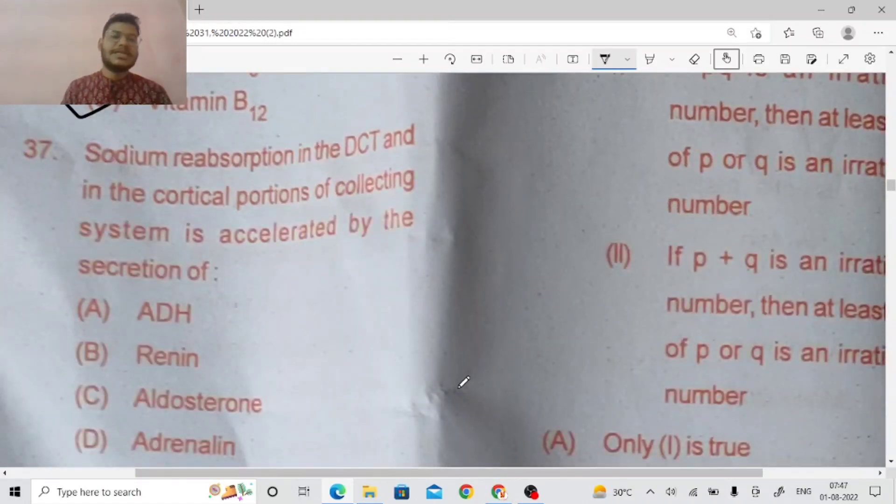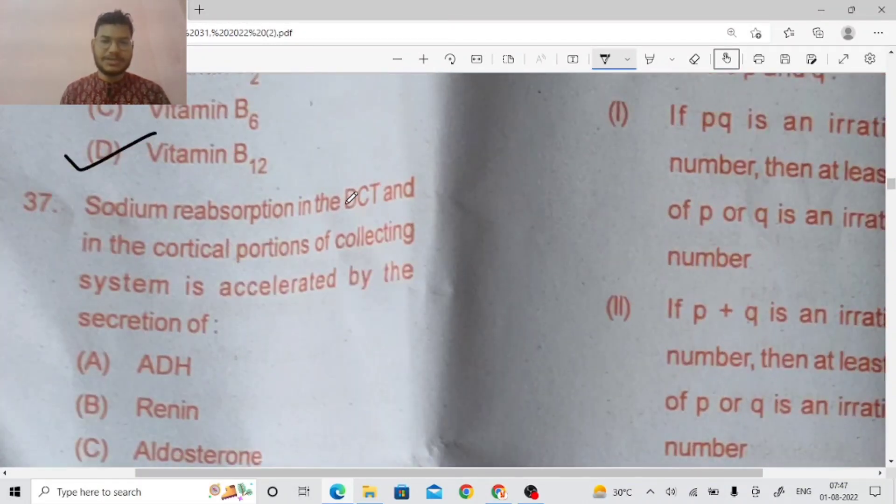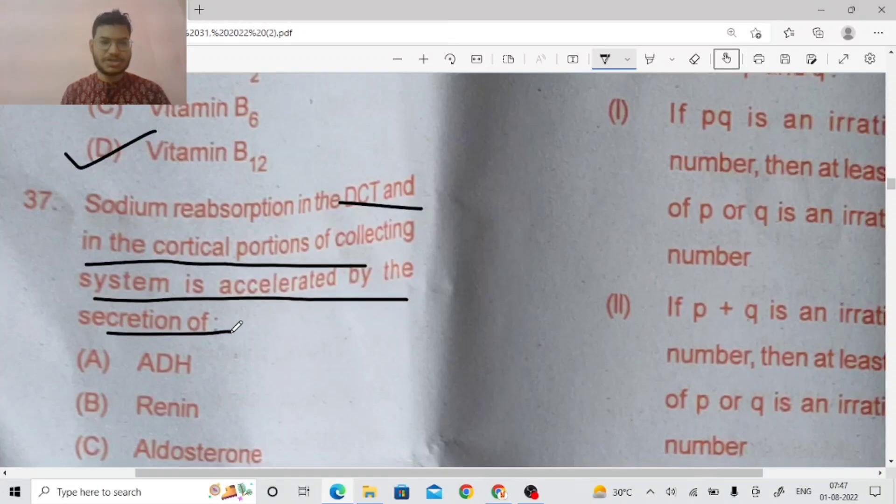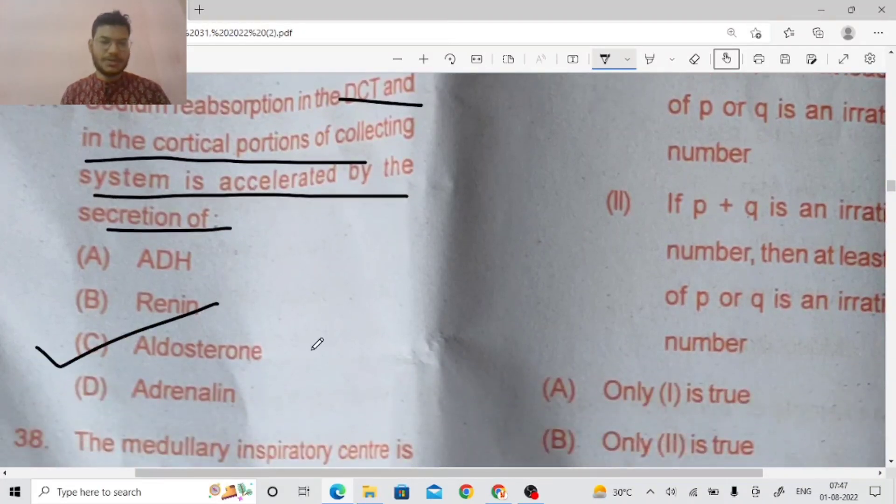Sodium reabsorption in the distal convoluted tubule and in the cortical portion of the collecting system is accelerated by the secretion of, here the right answer is aldosterone.